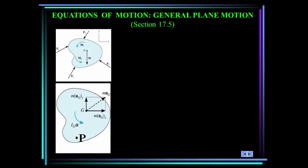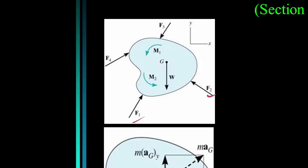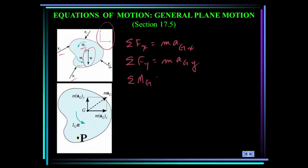When a rigid body is subjected to external forces and couple moments, it can undergo both translational and rotational motion — this combination is called general plane motion. Here we see a rigid body in blue being acted upon by numerous forces and moments, with the weight vector located at the center of gravity. We establish an inertial coordinate system xy, and the scalar equations of motion are: summation of forces in x equals mass times acceleration of mass center in x; summation of forces in y equals mass times acceleration of mass center in y; and summation of moments about the mass center equals the mass moment of inertia about the mass center times alpha.